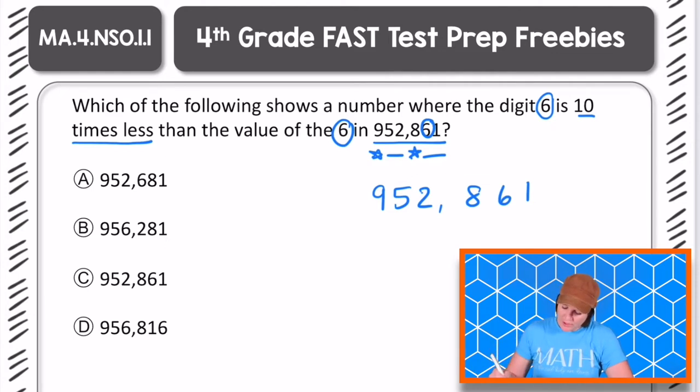So which one, A, B, C, or D, shows a number where the 6 is 10 times less than the number I have here. So if we know our 6 is right here, this is the original number, we are trying to find which answer choice has a 6 that is 10 times less. Well, 10 times less means that we're going one place over to the right. We're going from taking our digit 6 in the 10s place to putting our digit 6 in the 1s place. That would make it 10 times less.